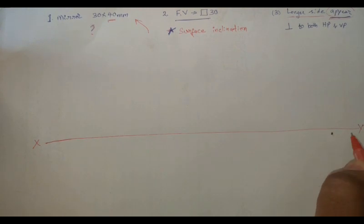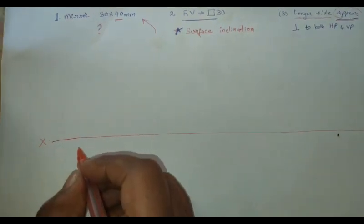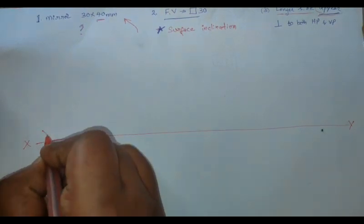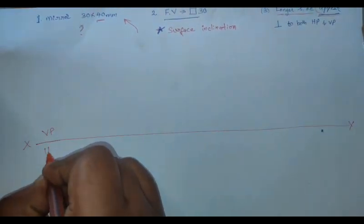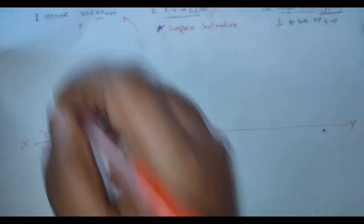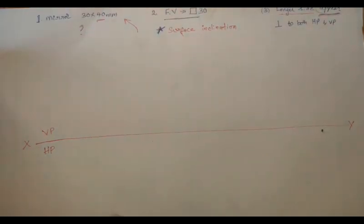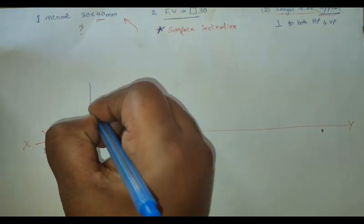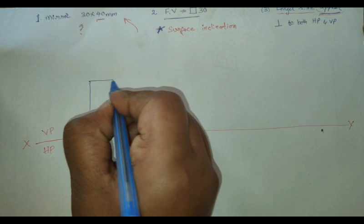Initially we shall draw XY line. XY line should be a thin line. VP, HP. We shall draw the rectangle, which is 30 and this length is 40 with the help of the scale. So that is nothing but the front view.